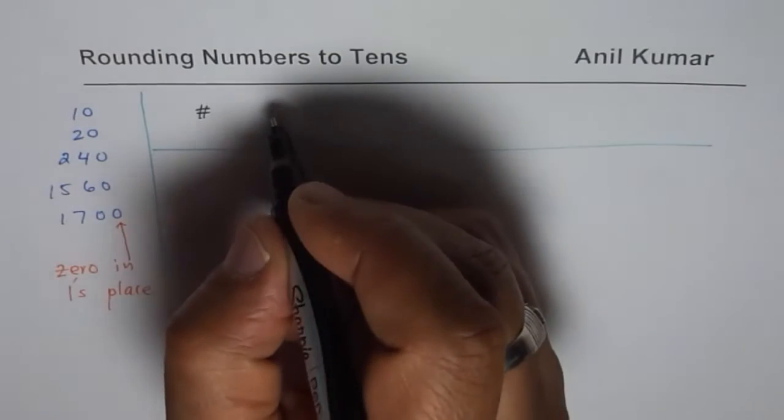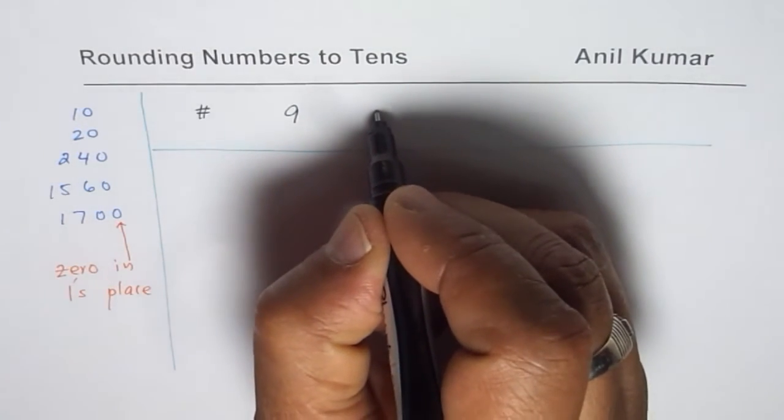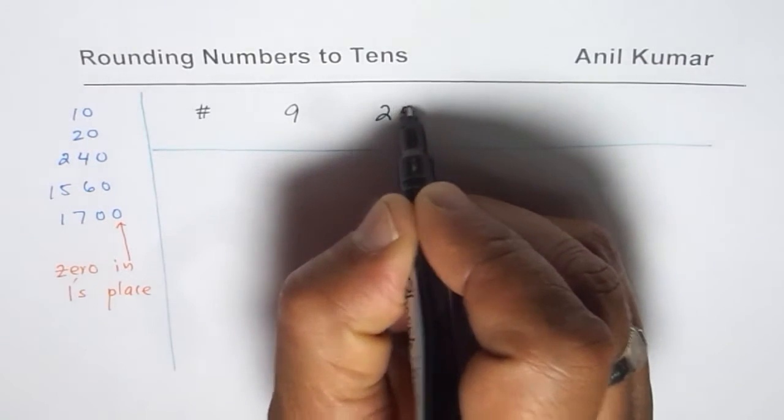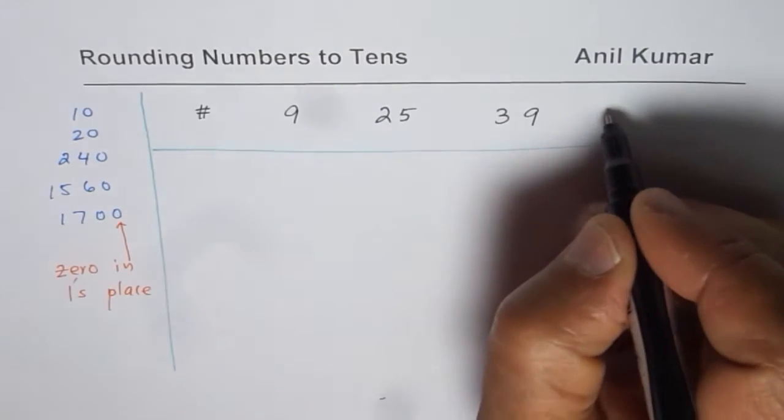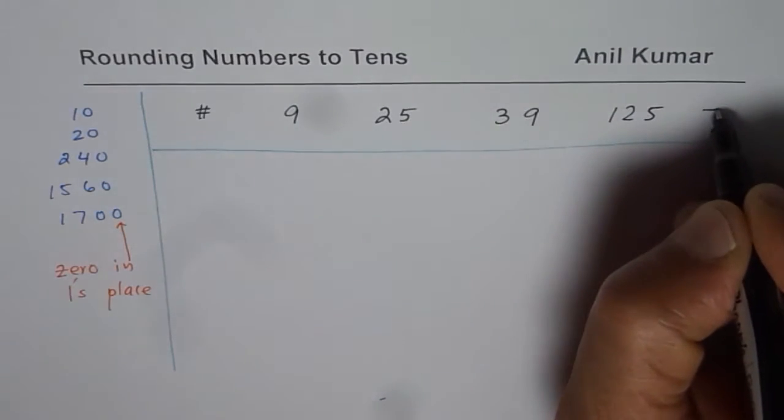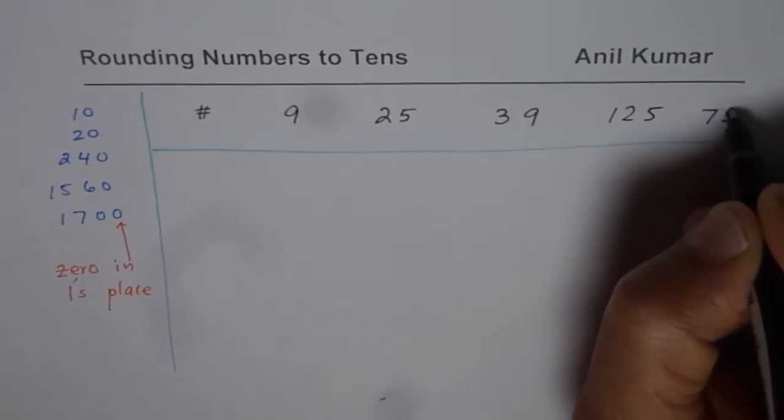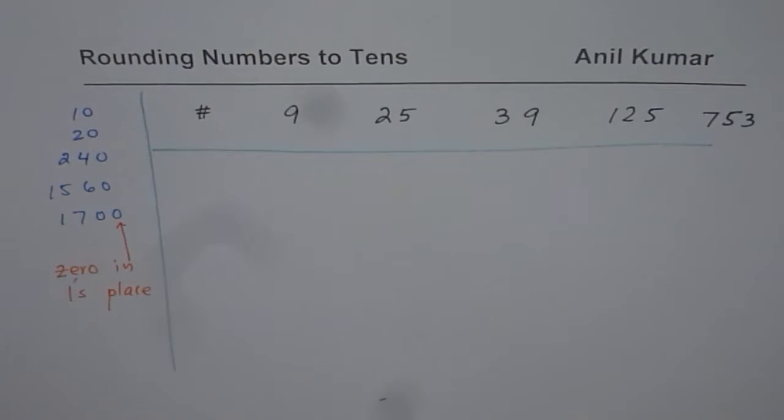So let me write down a few numbers and then we will round them to tens. Let us begin with small numbers like 9. Then we will have let's say 25, 39, 125, let us say 753. So these are a few numbers which we have taken.